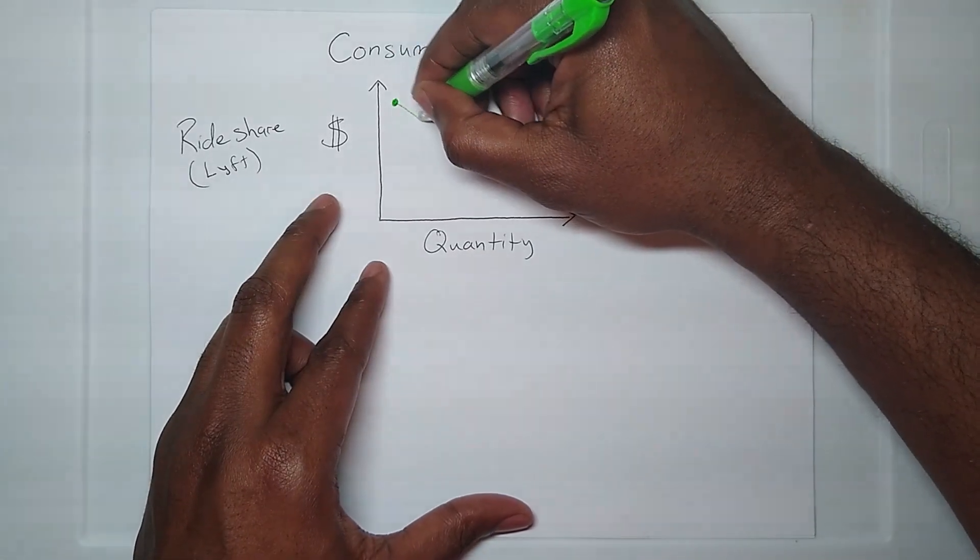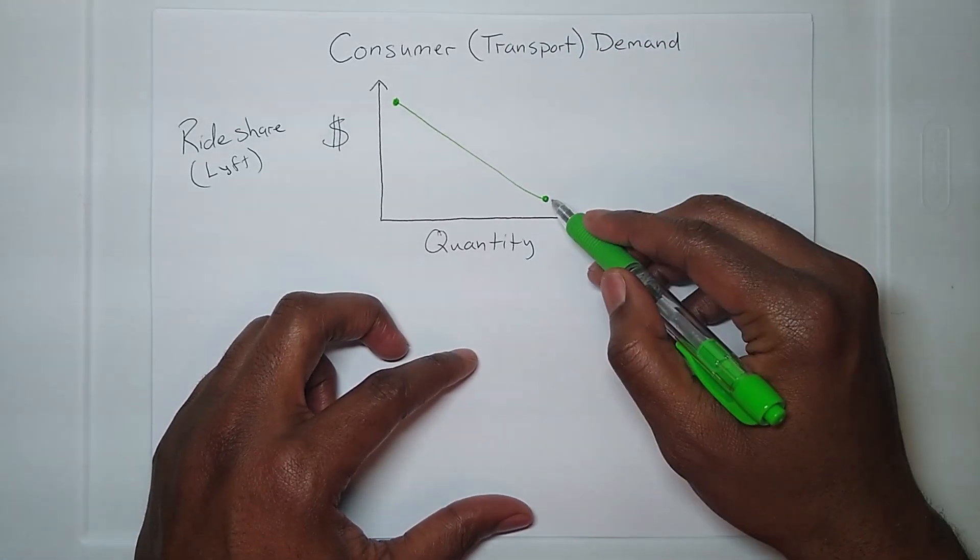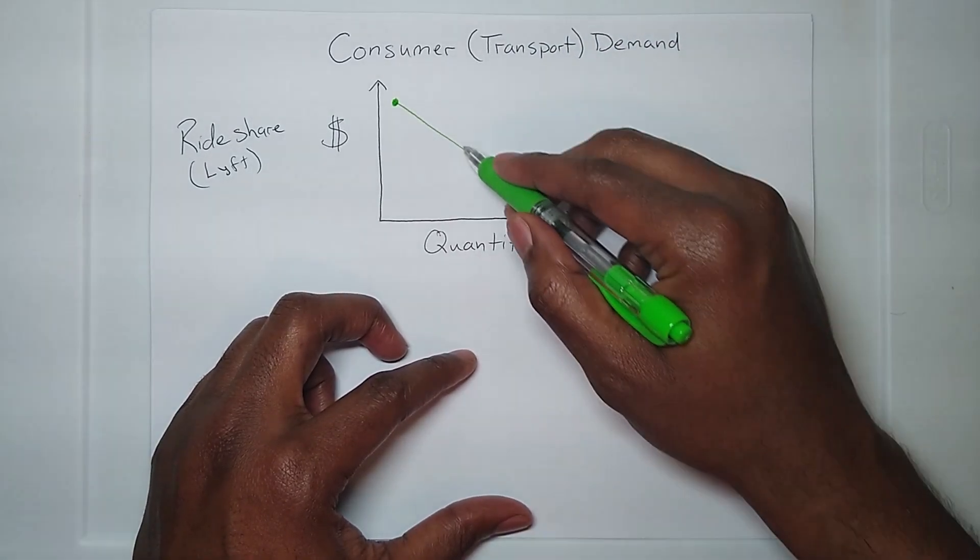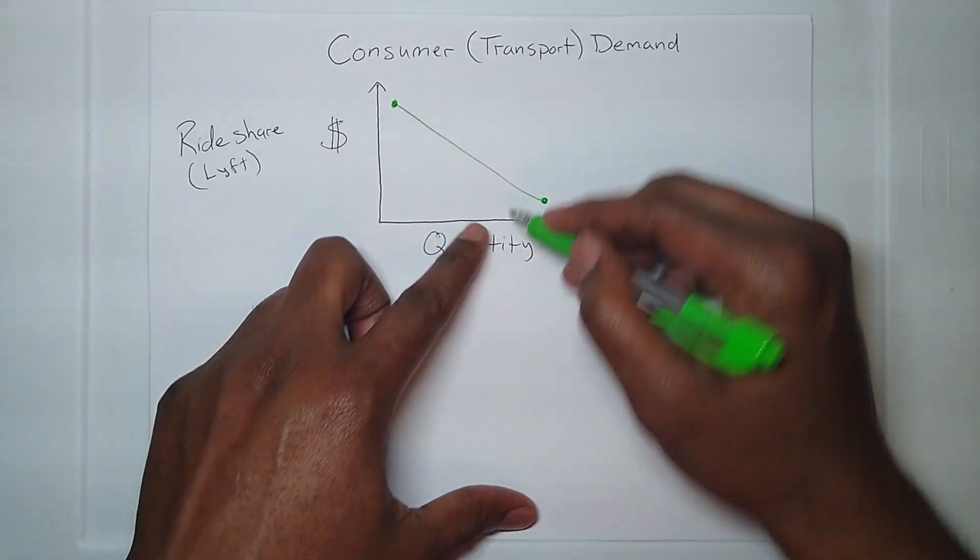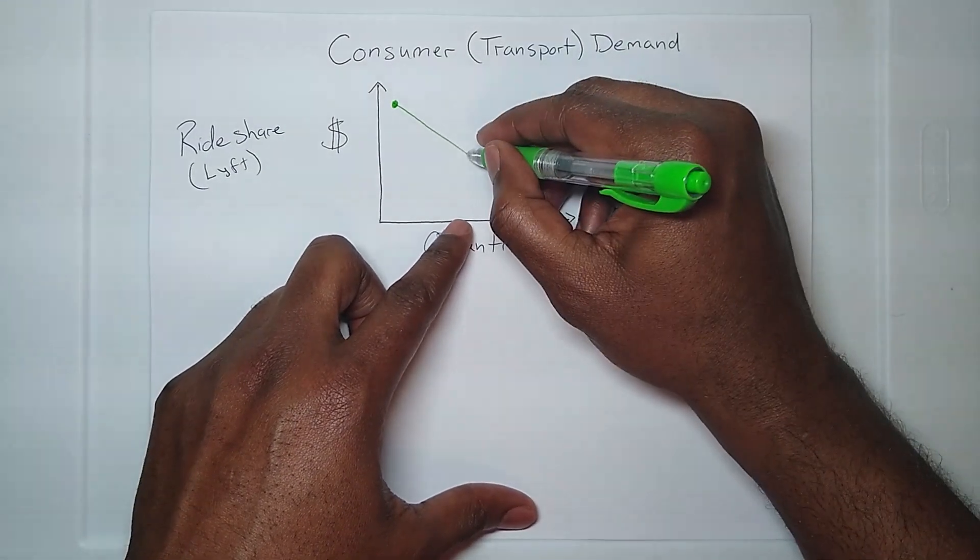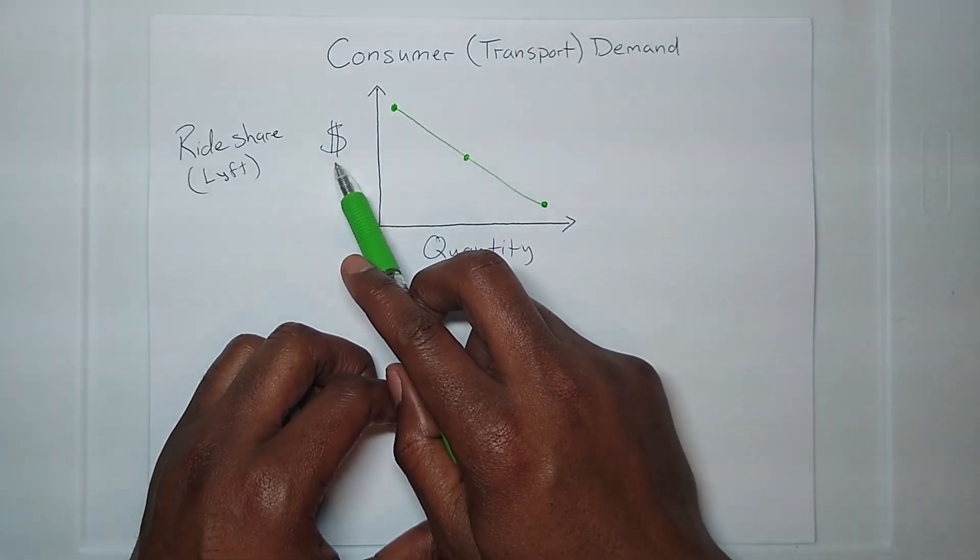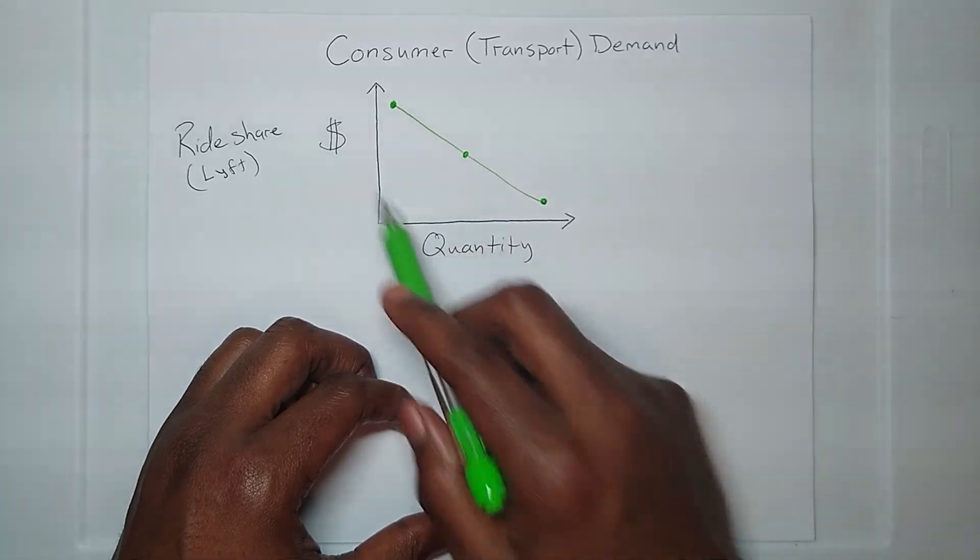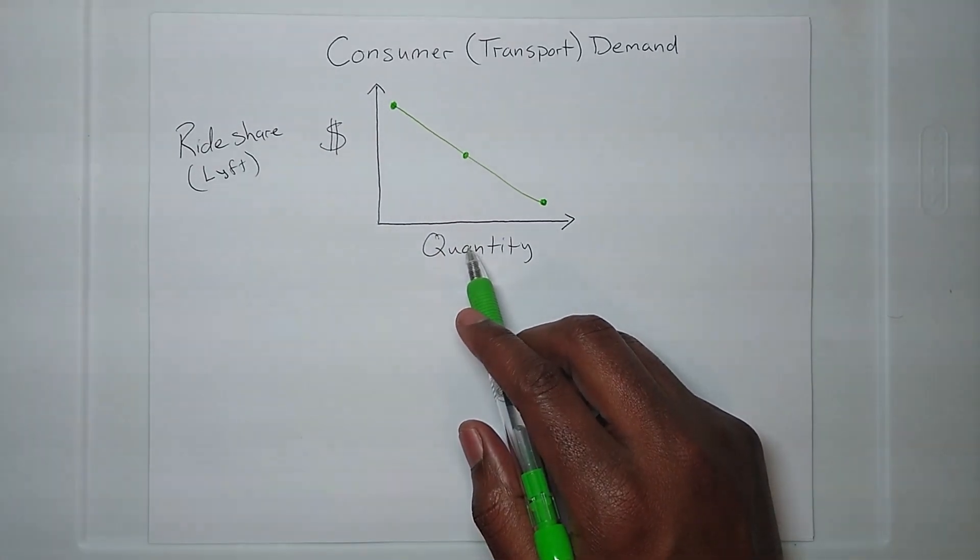And so that straight line relationship looks a little bit like this. If the costs were to increase, the quantity that's demanded will start to decrease. So there's an inverse relationship between the cost for a service or product and the quantity that's demanded for that same service or product.